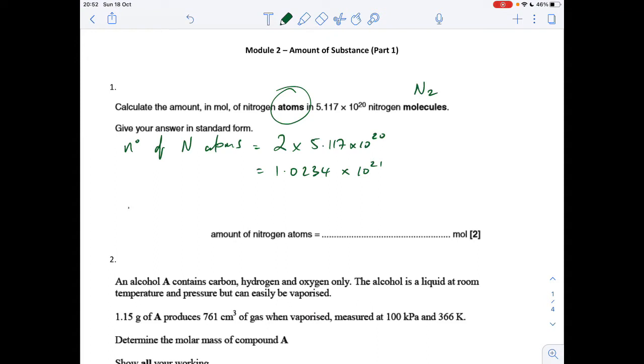The number of moles is the number of atoms, 1.0234 times 10 to the 21, divided by Avogadro's number. In standard form, that's 1.7 times 10 to the minus 3.